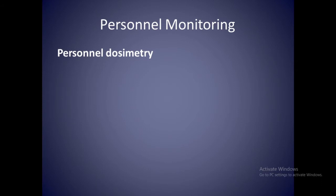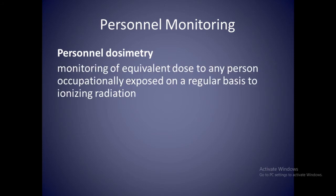To ensure that occupational radiation exposure levels are kept well below the annual effective dose limit, some means of monitoring personal exposure must be employed. The radiographer and other occupationally exposed persons should be aware of the various radiation exposure monitoring devices and their functions. Personal dosimetry refers to the monitoring of equivalent dose to any person occupationally exposed on a regular basis to ionizing radiation.